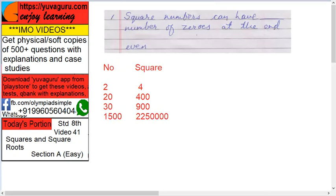Square numbers can have even number of zeros at the end. It means suppose this is a number and this is a square of that number. So how many zeros can it have? Can it have only one? Can 40 be a square of somebody?